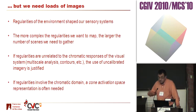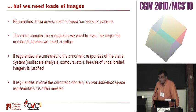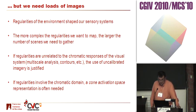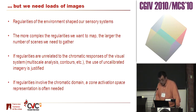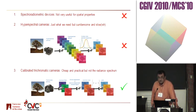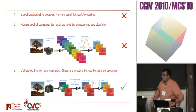The more complex these regularities, the more scenes you need to gather. If these regularities are not related to color, you can use uncalibrated imagery. But if you want to work in the chromatic domain, you need to work in a cone-activation space, and then you need something that is calibrated. So you need lots of pictures and calibrated ones. Based on that, we decided that having a cheap and practical solution would be best — to have lots and lots of images and to put them online so people can download them.